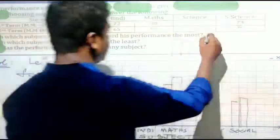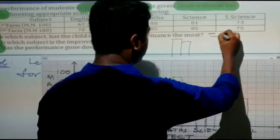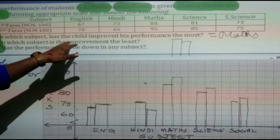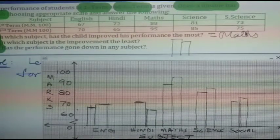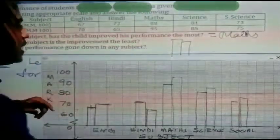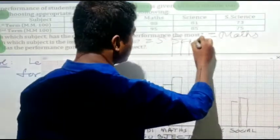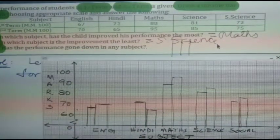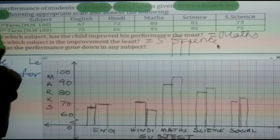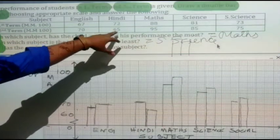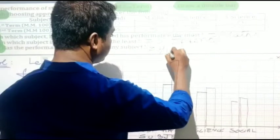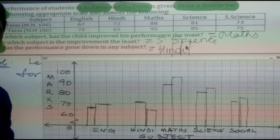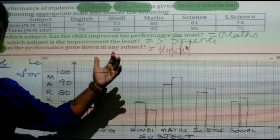The most improvement is in Maths. The least improvement is in Social Science, improved by only 2. Has the performance gone down in any subject? Yes — in Hindi, it went down from 72 to 65. So the answer is Hindi. This concludes problem number 4.